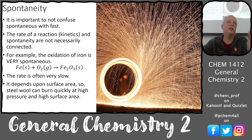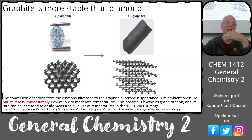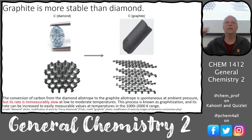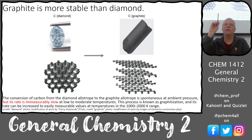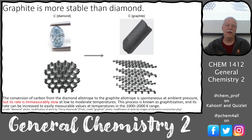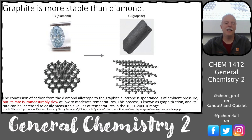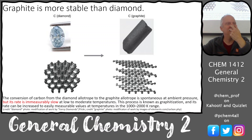If you just set steel wool out on the bench, it's a really slow oxidation reaction. Spontaneity has nothing to do with the speed of the reaction — it could be very, very slow. Diamond is actually uphill chemically from graphite, so your diamond ring would like to turn into graphite, but it's immeasurably slow at moderate temperatures. If you put it in the 1000–2000 Kelvin range, you could get it to convert to graphite — so don't put your diamond ring in a fire because it might graphitize.